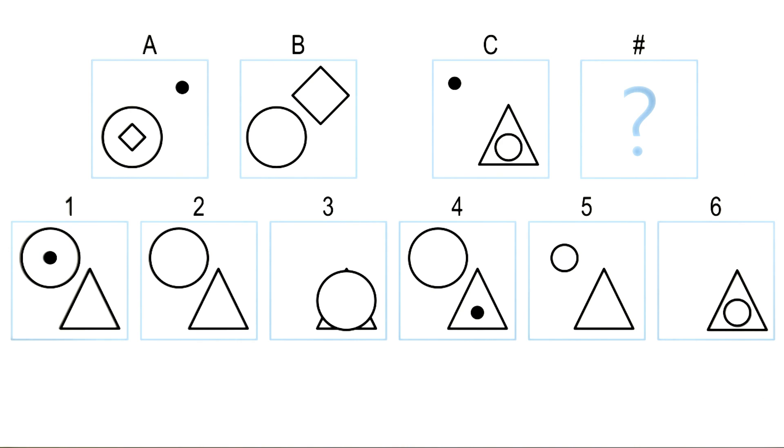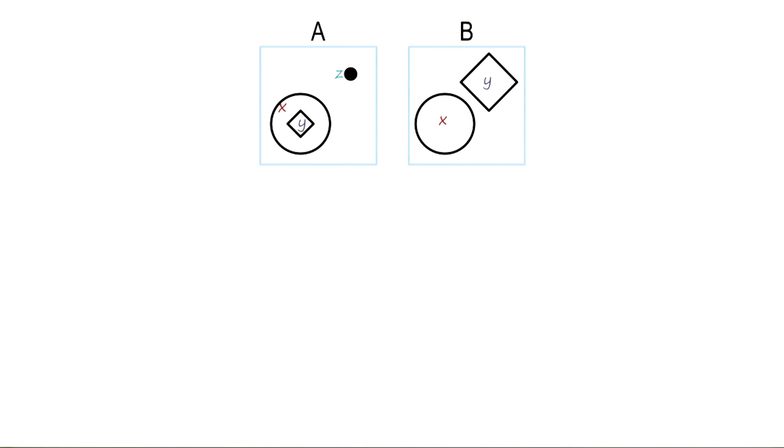How will we represent our knowledge of A, B, C, and the six choices at the bottom? Let us begin with A and B. We'll try to build semantic networks that can represent our knowledge of A and B.